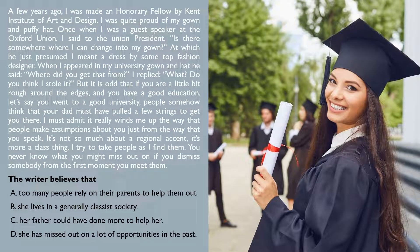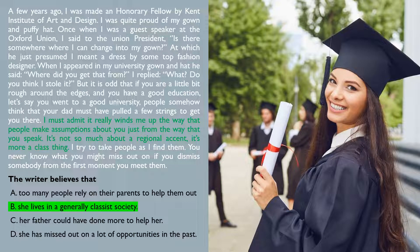Let's have a look at a Part 5 style question that focuses on the writer's opinion. This extract is taken from a newspaper column. The writer begins by describing something that happened to them a few years ago. Pause the video while you read the text and try to answer the question below. The correct answer here is B. The writer believes that we live in a classist society, that some people are prejudiced against people they see as lower class. We can tell this from where she writes 'it's a class thing,' and also the fact that she mentions it winds her up, meaning it annoys her. Notice that the final sentence talks about 'missing out,' which is a key word in option D — but the text isn't talking about things the writer missed out on in the past. This is a classic distractor.